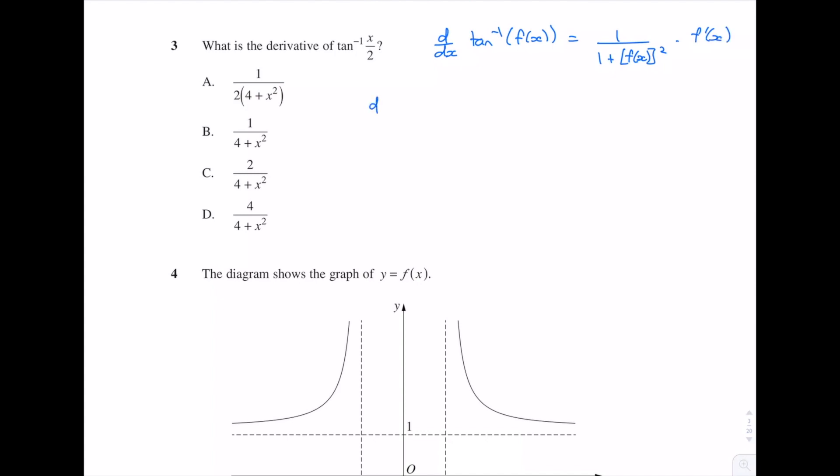So in our case we're differentiating inverse tan(x/2). So that's going to be 1 over 1 plus our inside function, which is x/2, squared, times by the inside derivative. What's the derivative of x/2? With respect to x it's a half.